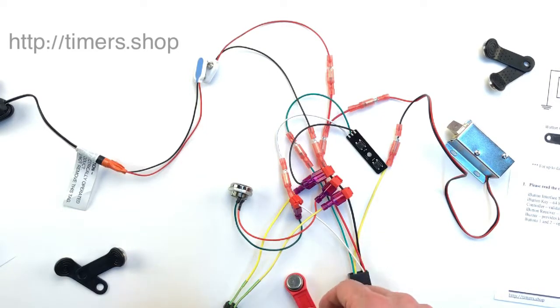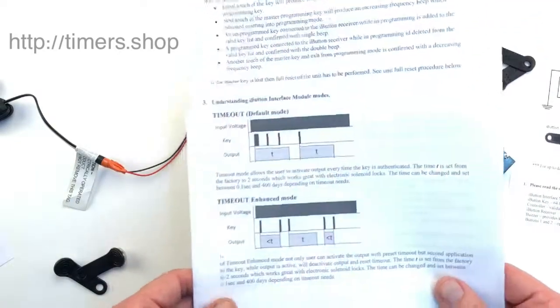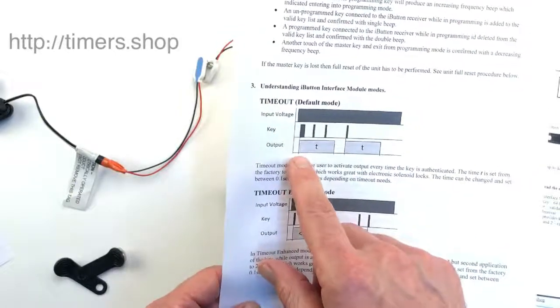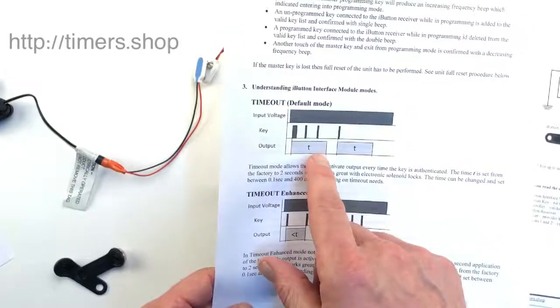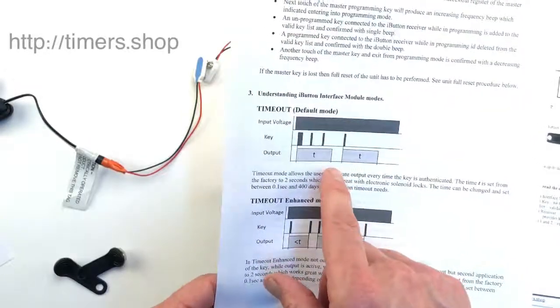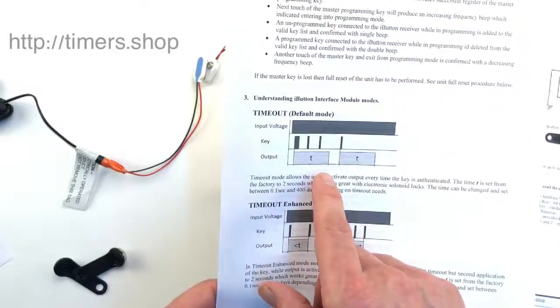In the manual, you'll find that this lock has three different modes. The first mode is just a standard timeout mode. When you apply the key, it activates the output for a period of time, and you can change it. By default it's set to two seconds, but you can change it to two hours or days.